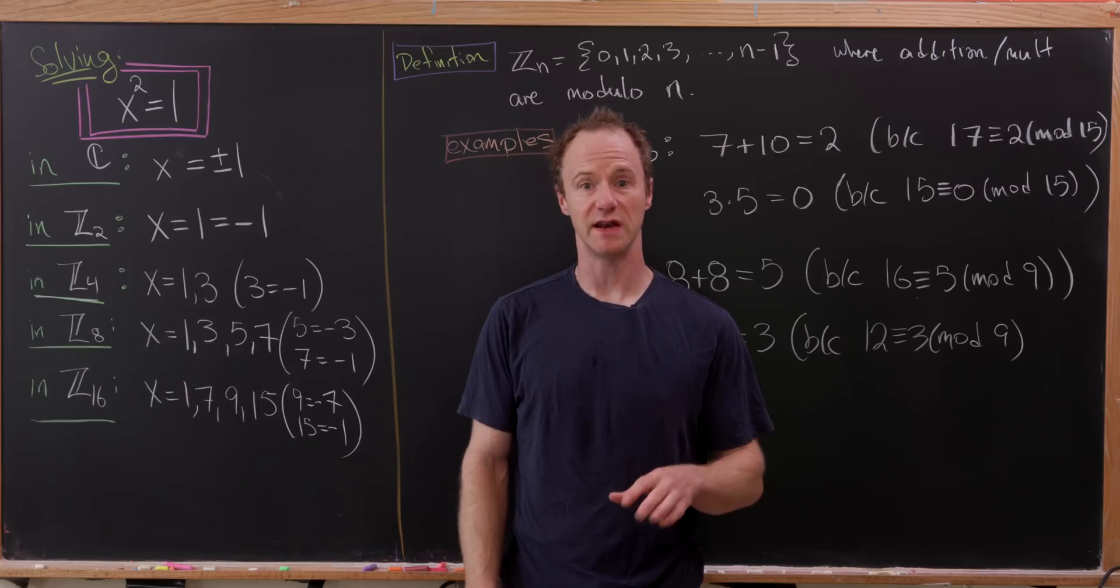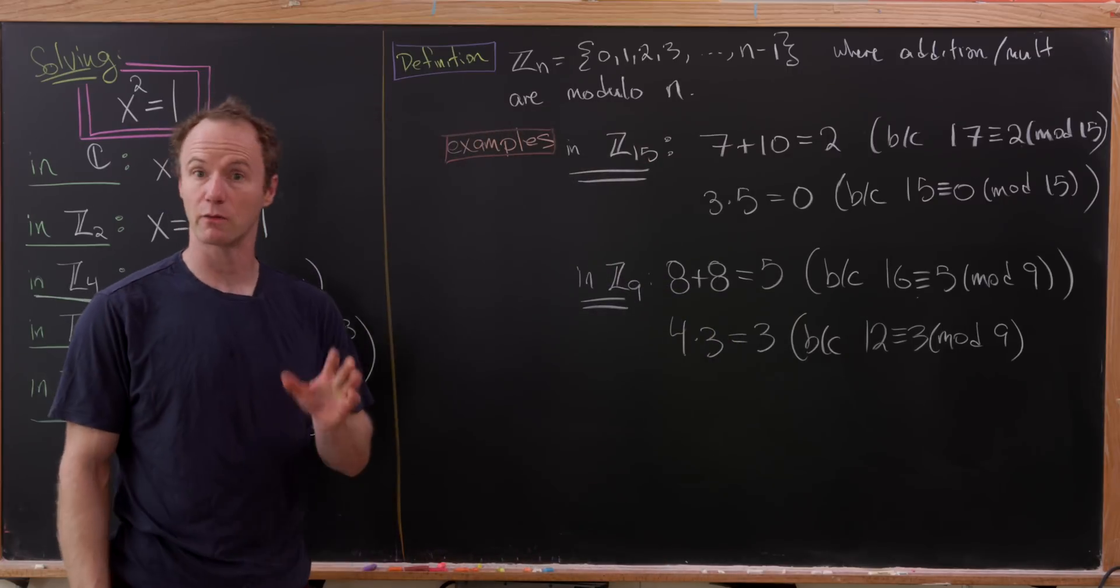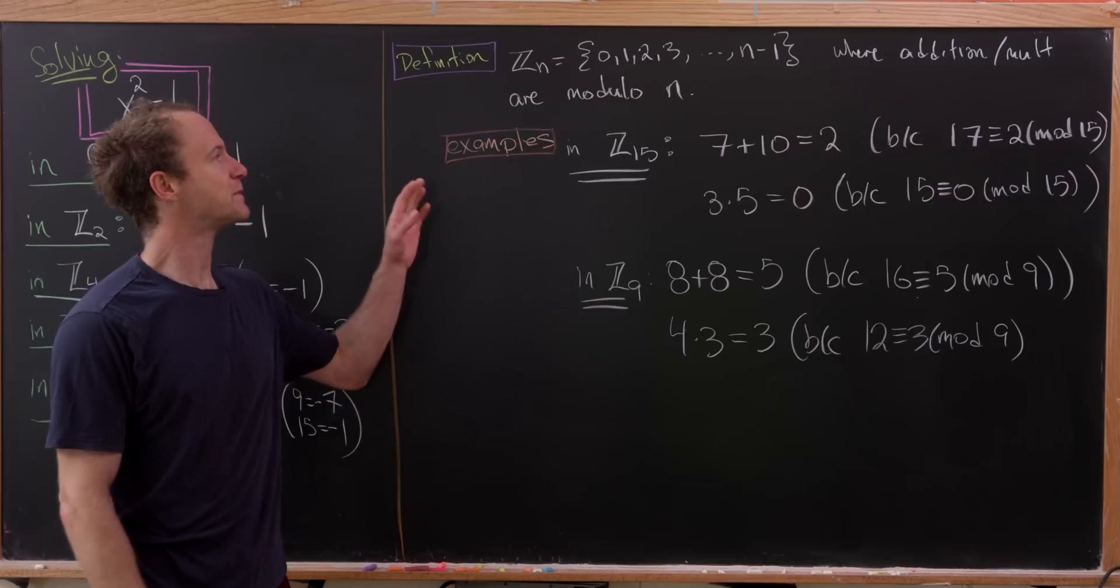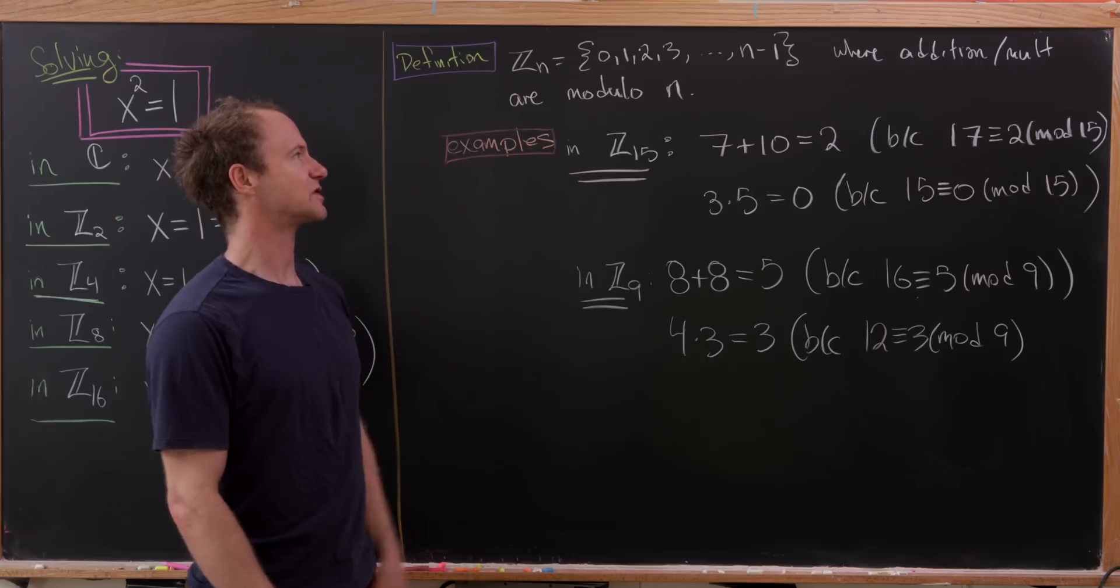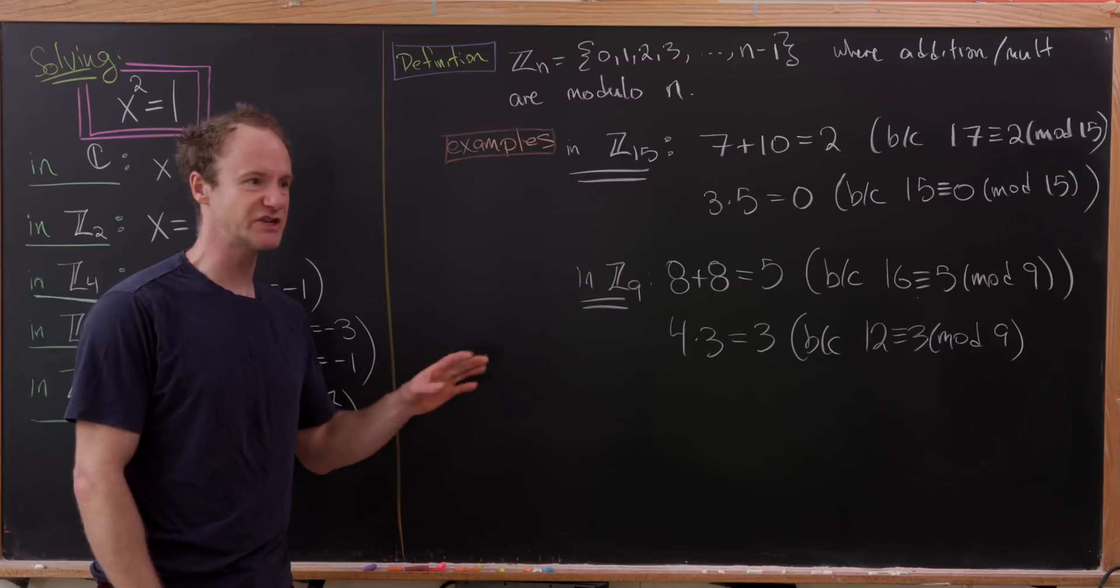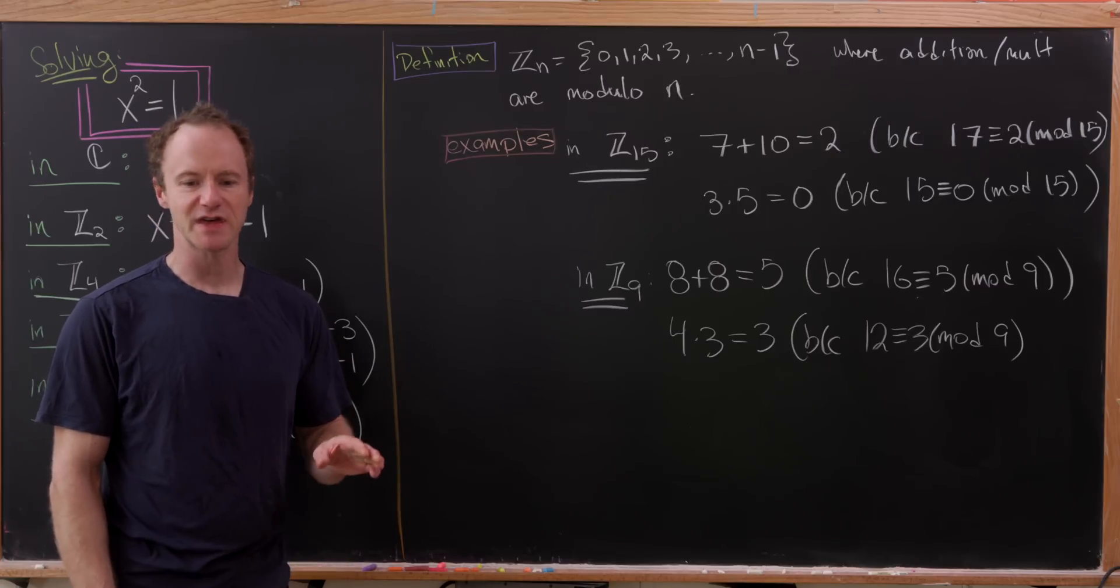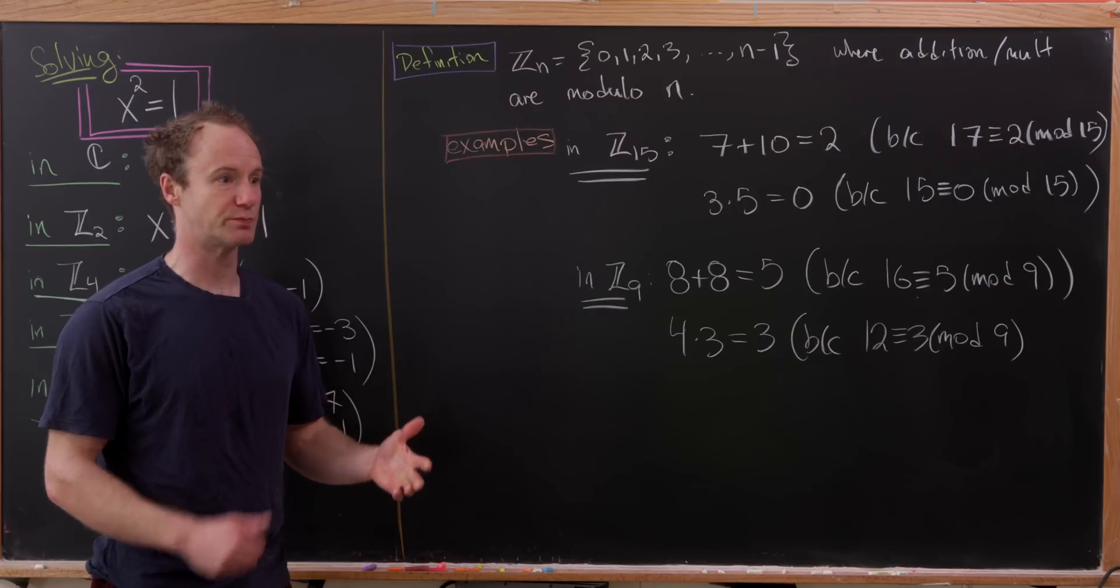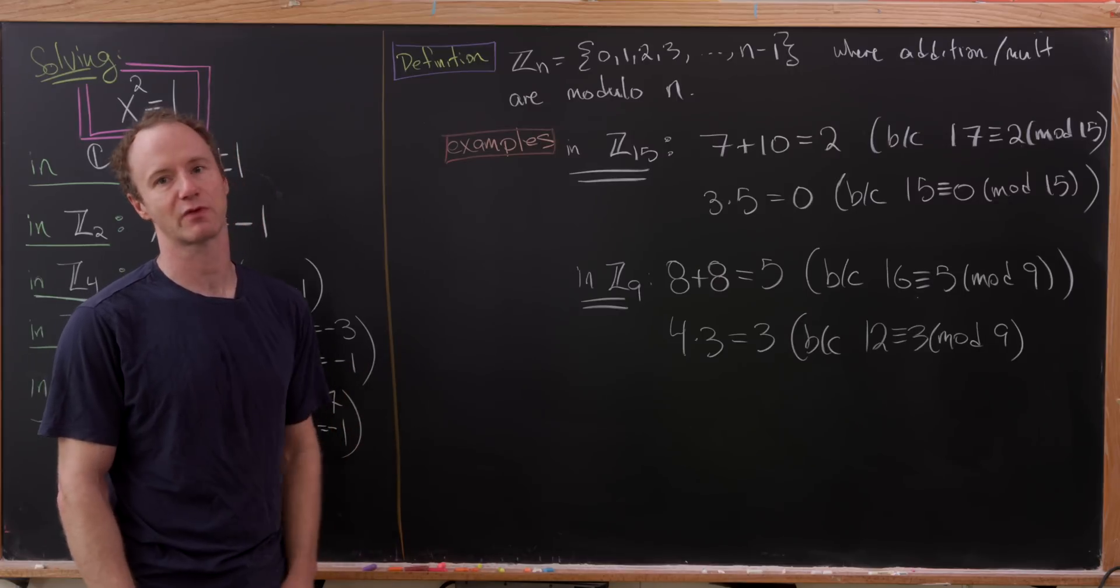But we're going to look in ℤ mod n. But you might say, well, what's ℤ mod n? Well, let's review that real quick. We can very simply think of it as the numbers between 0 and n-1, where addition and multiplication are done modulo n. So that means that after you perform addition and multiplication, you divide by n and keep the remainder.